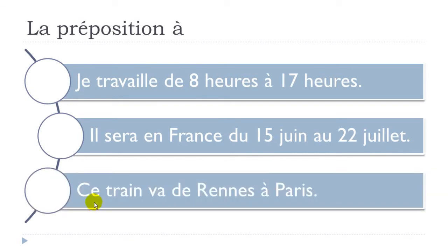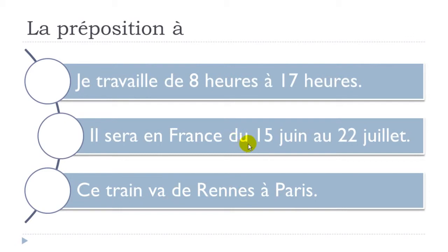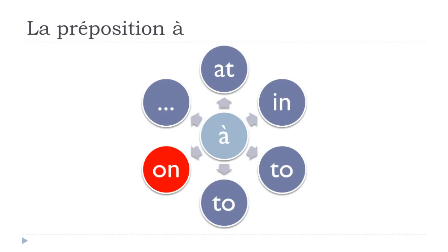Last example: 'ce train va de Rennes à Paris' — this train goes from Rennes to Paris. Here we just put the names of the towns without articles. So whether it's 'à 17h', 'au 22 juillet', or 'à Paris', À is used for the 'to' concept combined with DE for 'from...to'.